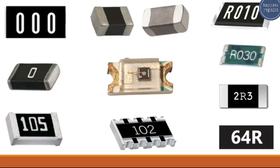Hello everyone. In this video we're going to see the types of SMD resistors. As you can see, we have many types of resistors. This resistor is an accurate sense resistor, and this one is also an accurate sense resistor. The value of this resistor is 0.01 ohms.